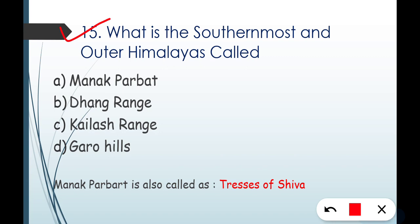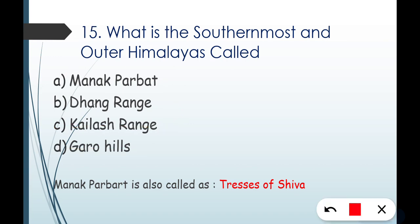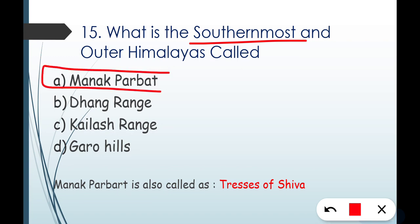Question number fifteen: what is the southernmost and outer Himalayas called? Options are Manak Parvat, Dhauladhar Range, Kailash Range, or Garo Hills. Garo Hills come under Eastern Himalayas in Meghalaya; Kailash Range is in the north. The correct answer is Manak Parvat. The outer Himalayas — Manak Parvat — is also called the 'Treasure of Shiva' or 'Traces of Shiva.'